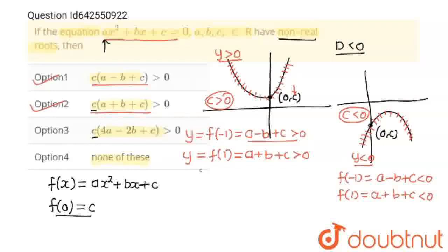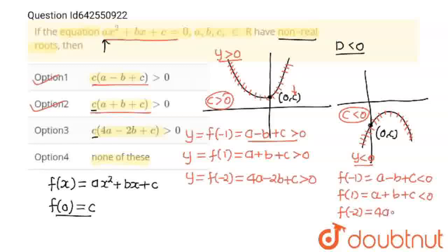Now I'm going to find c(4a - 2b + c) using f(-2). At x = -2, we get 4a - 2b + c. For the first graph this is greater than 0, and for the second graph it is less than 0. Positive times positive is positive, and negative times negative is also positive. So option 3 is also correct for both graphs. Option 4, which is 'none of these', is not correct. So options 1, 2, and 3 are all correct. Thank you, students.